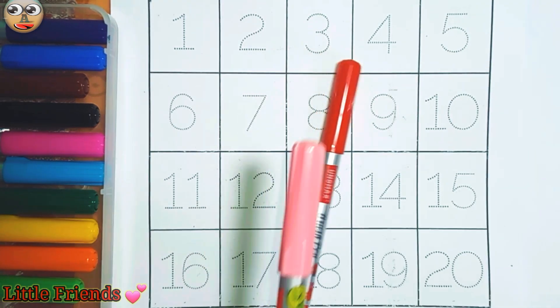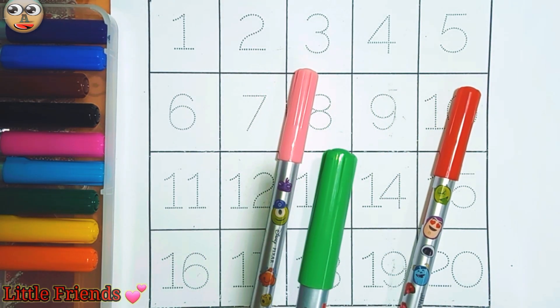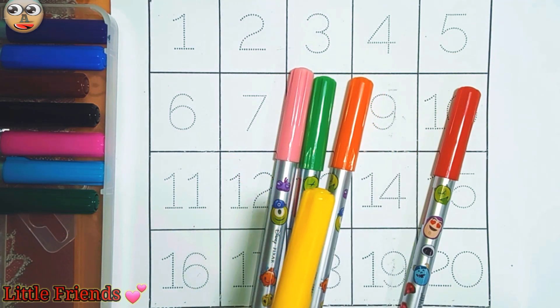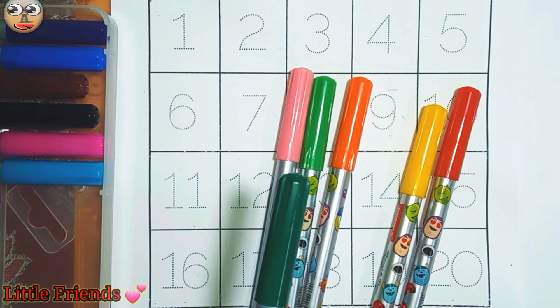This is red color. This is peach color. This is green color. This is orange color. This is yellow color. This is dark green color.